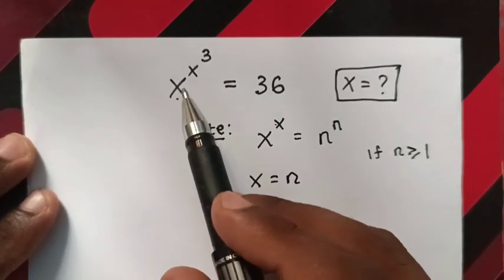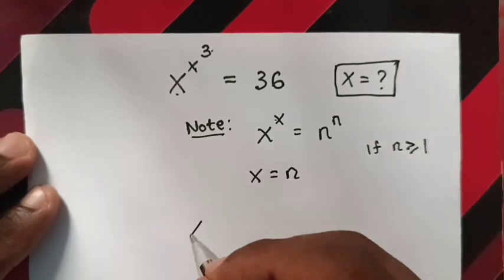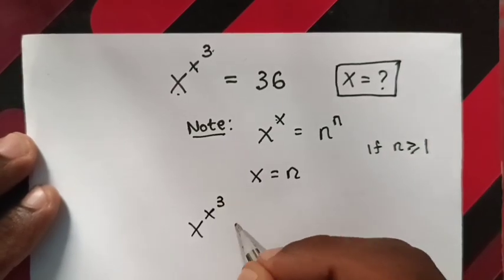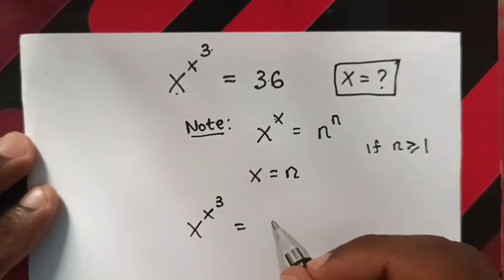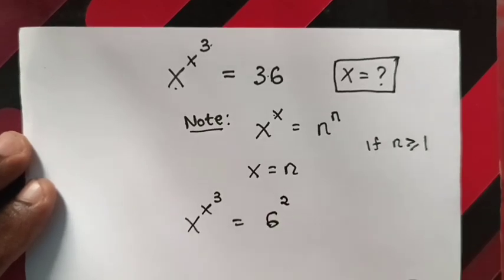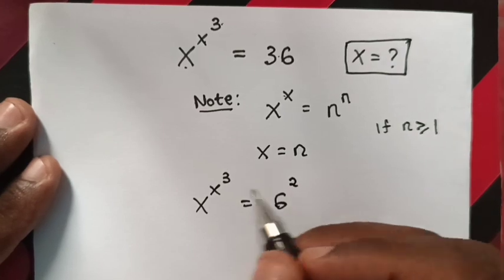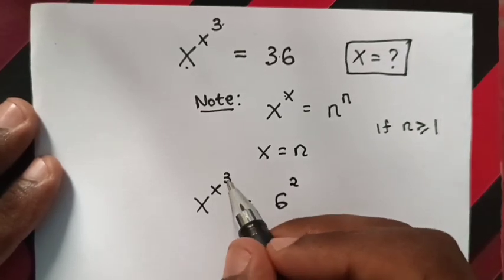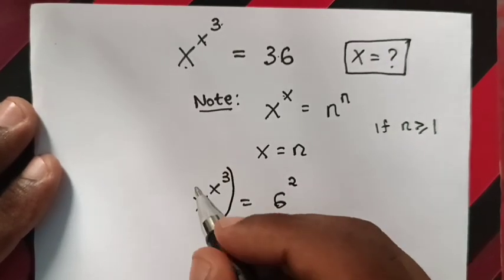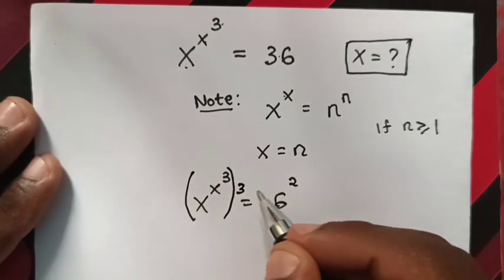Now, x^(x^3) = 36 is the same as 6^2. Here we have power of 2 and power of 3. To have the same base and same power, we multiply by the power of 3 on both sides.